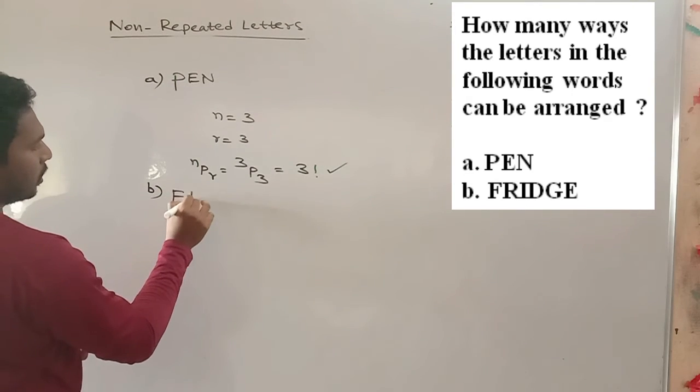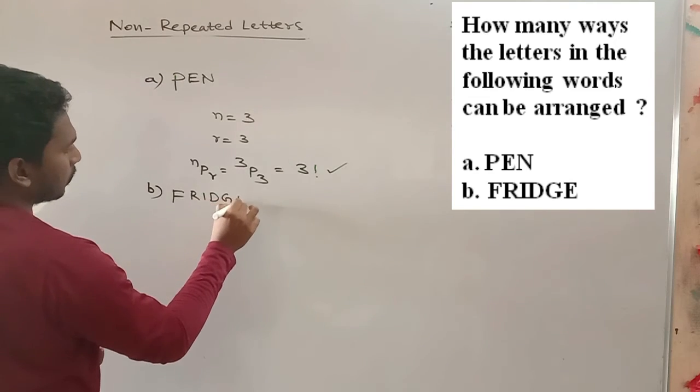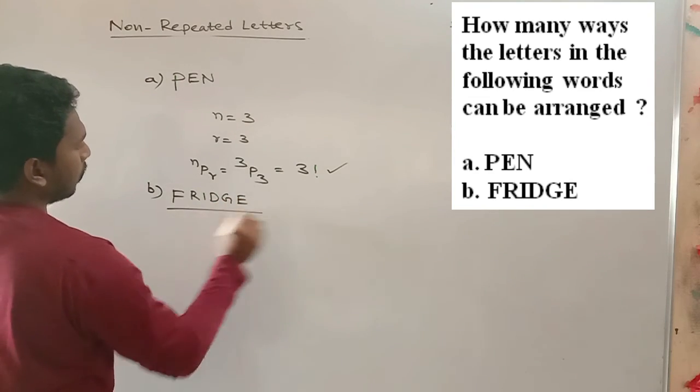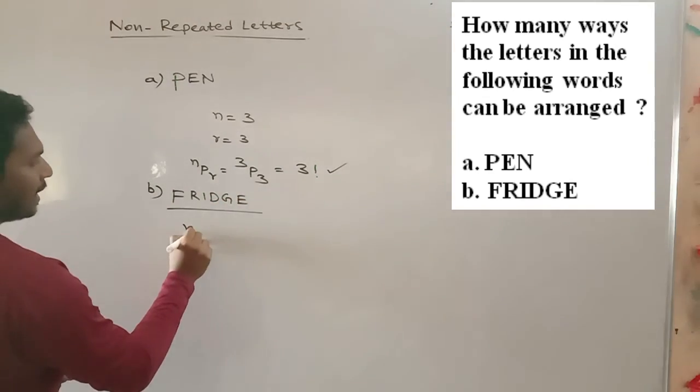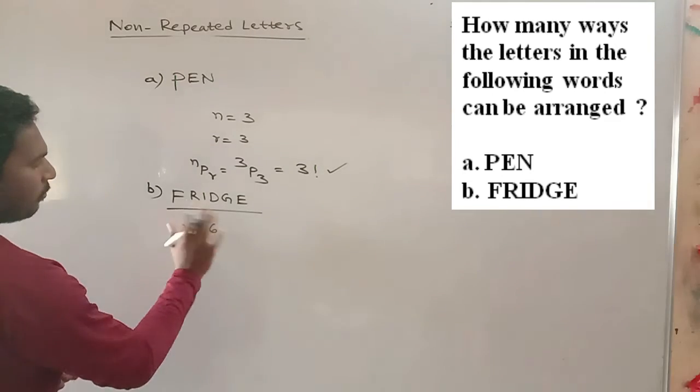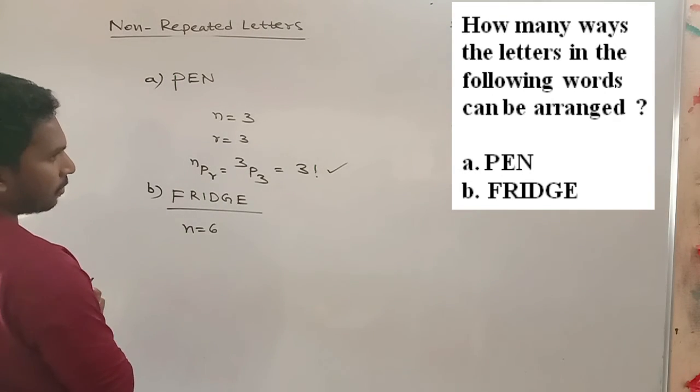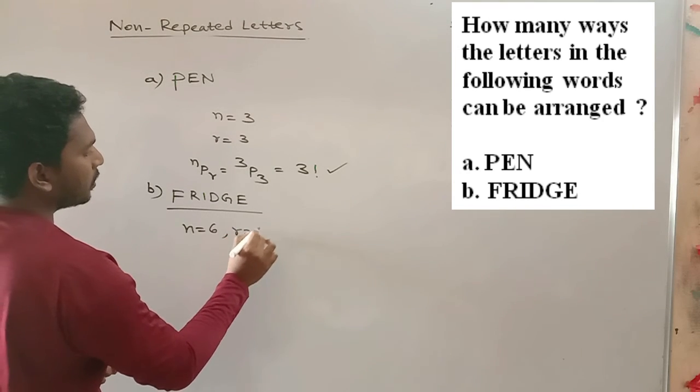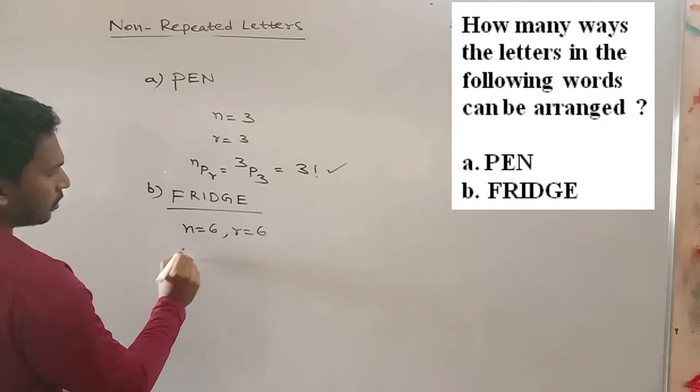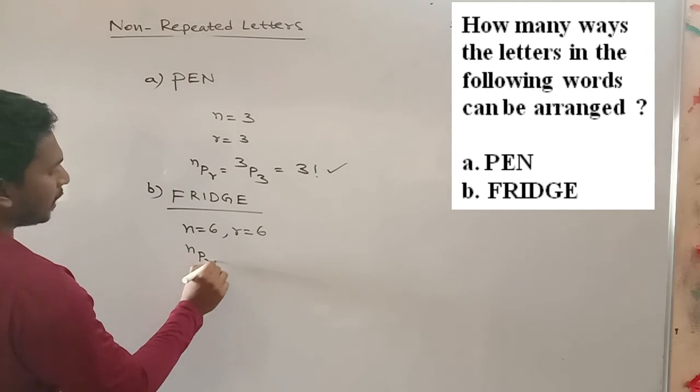Next, the second word given is fridge. So in this n is 6. And after rearrangement also, the number of alphabets remains the same. So r is equals to 6. So according to our formula NPR, it is 6P6. And that is equals to 6 factorial.